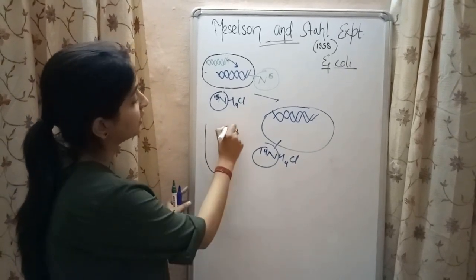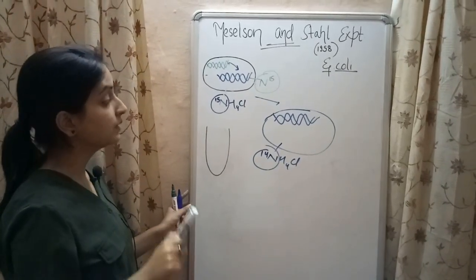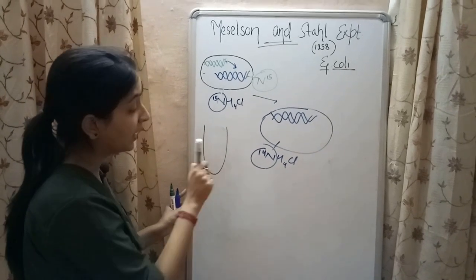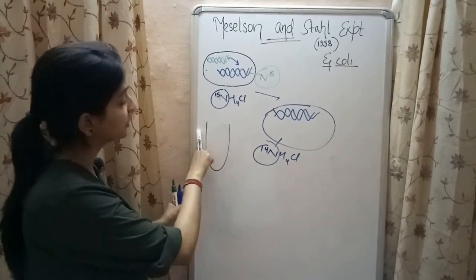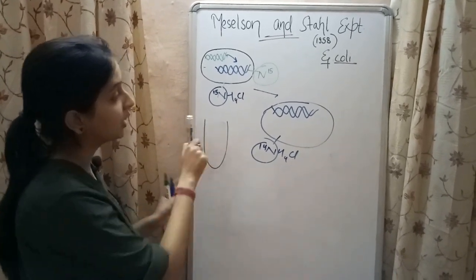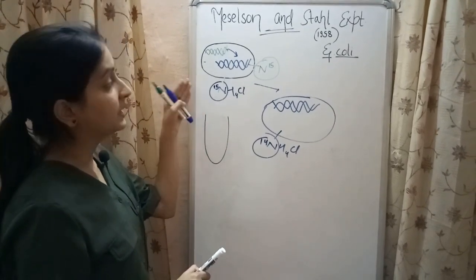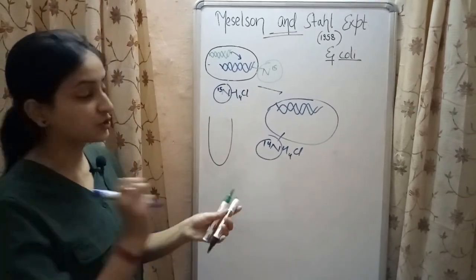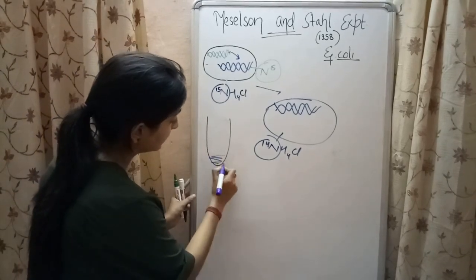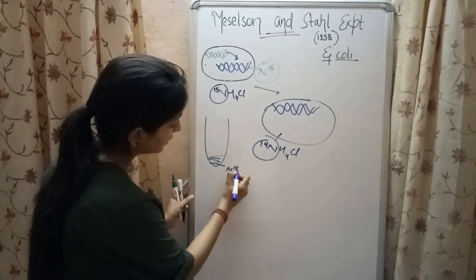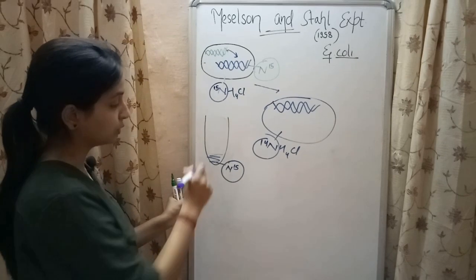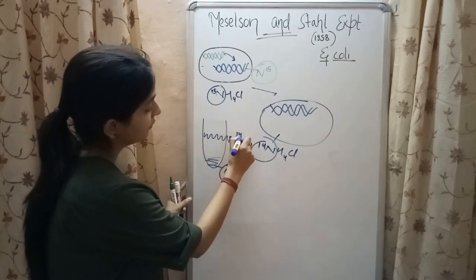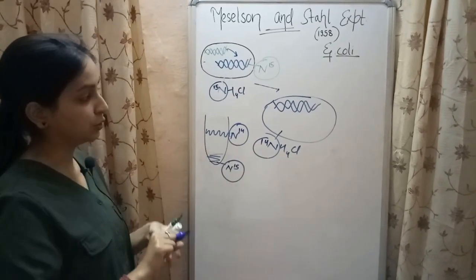In centrifugation, the DNA which is heavier in nature settles at the bottom of the centrifugation tube whereas the lighter DNA lies at the top of the tube. So between N15 type DNA and N14 type DNA, N15 is heavier in nature, meaning the DNA with N15 isotope will lie at the bottom of the centrifugation tube while the N14 type DNA will lie at the top.